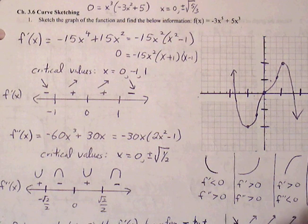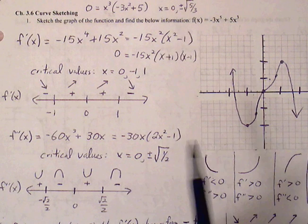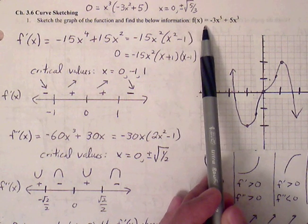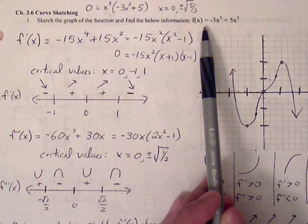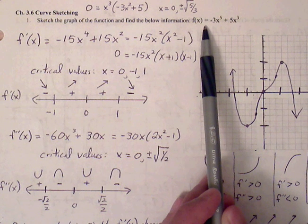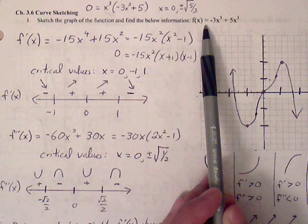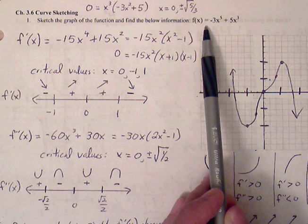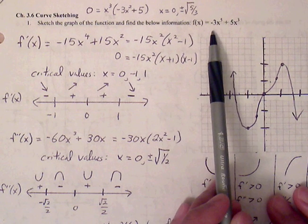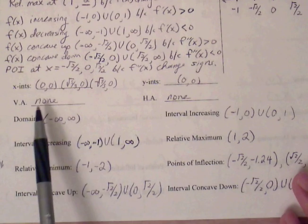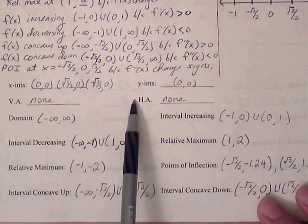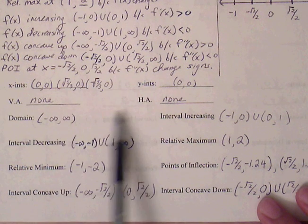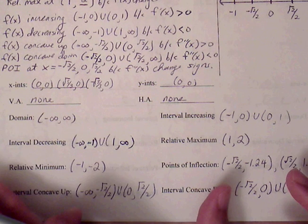We're putting everything together with section 3.6 on curve sketching. We're going to find the first derivative and create the sign line for f prime, then find the second derivative and determine the sign line for concavity and points of inflection. First, we'll fill in the pieces of information the problem asks for: x-intercepts, y-intercepts, vertical asymptotes, and horizontal asymptotes.